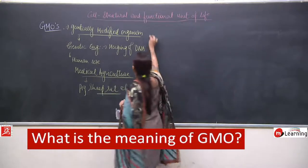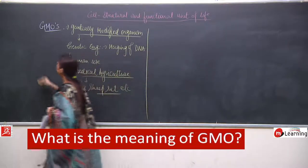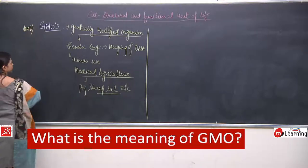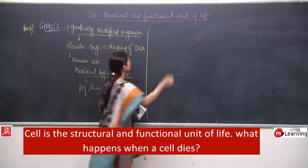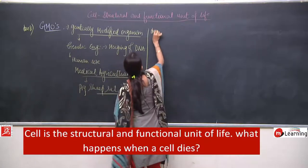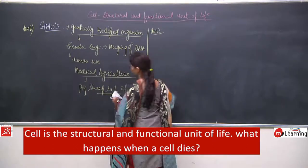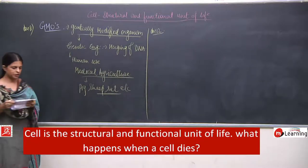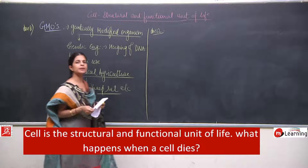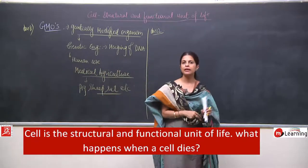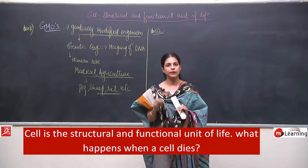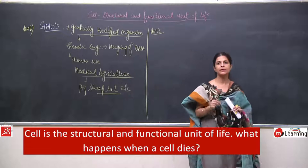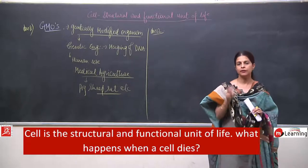This was answer number 11. Now we move to question number 12: cell is a structural and functional unit of life — what happens when cells die? A cell is a living structure, the smallest living part of any living organism.